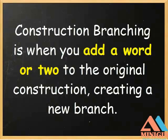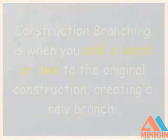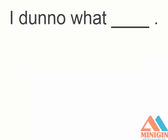Now, construction branching is when you add a word or two to the original construction, creating a new branch. For example, let's add "what."